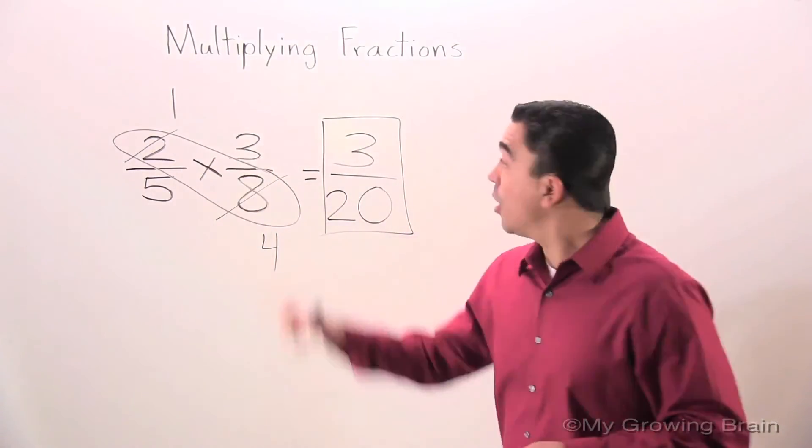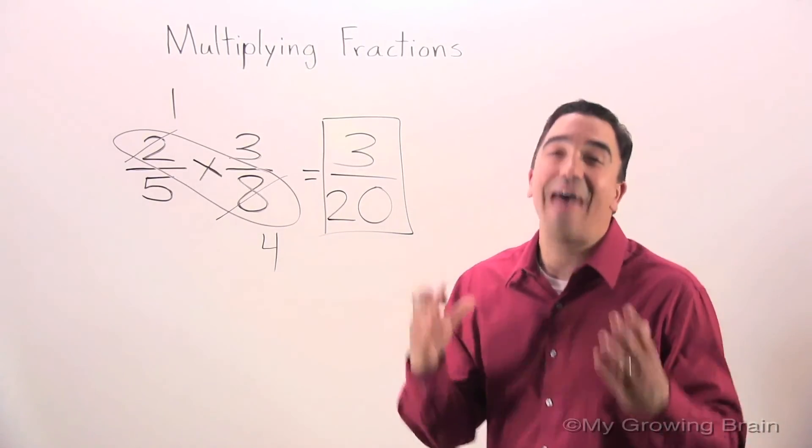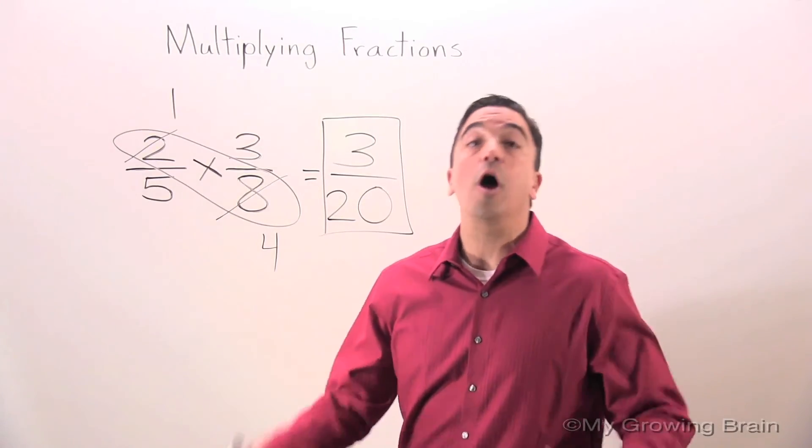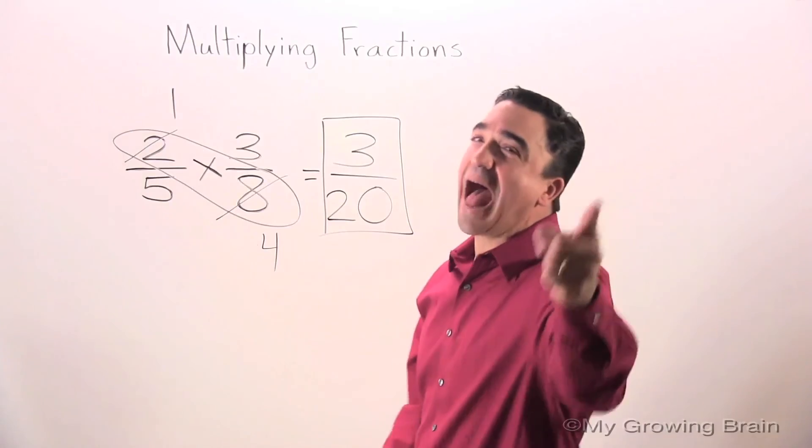2 fifths times 3 eighths equals 3 twentieths. That concludes our lesson on multiplying fractions, Coach Mike at My Growing Brain Challenge Yourself.